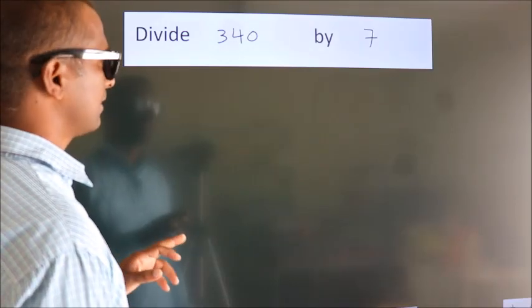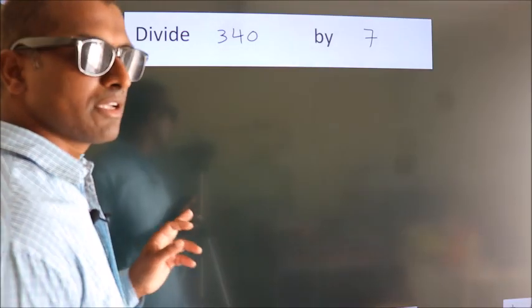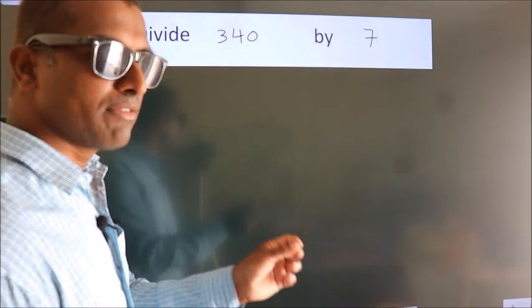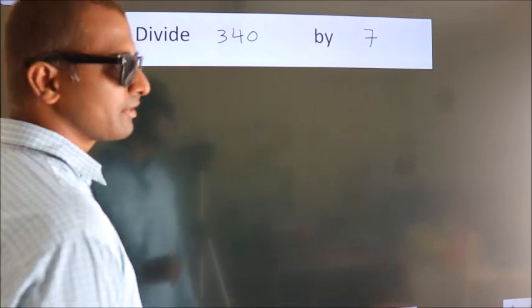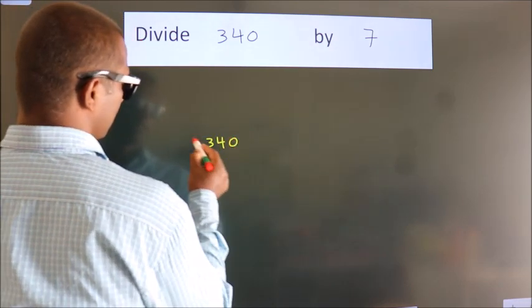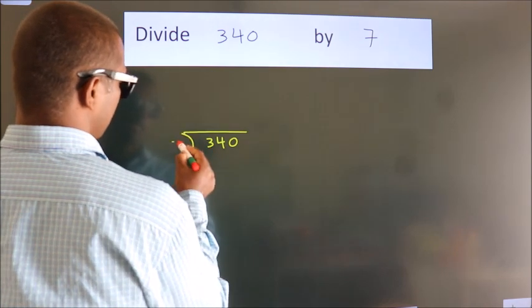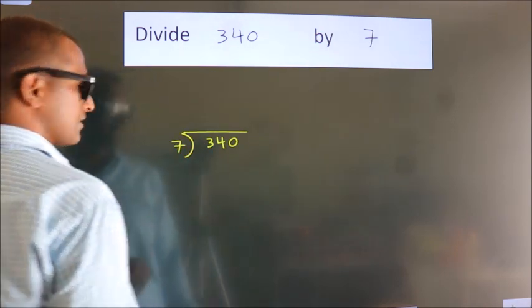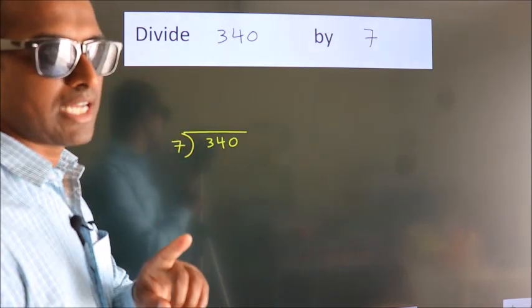Divide 340 by 7. To do this division we should frame it in this way: 340 here, 7 here. This is your step 1.